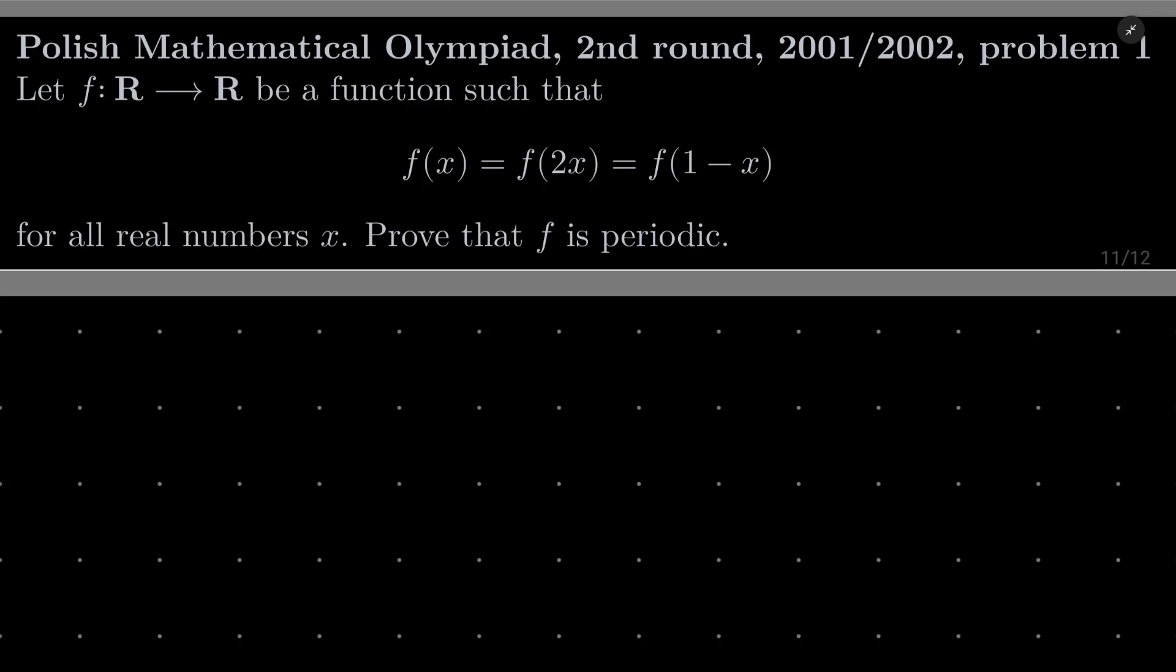Let f from the set of real numbers into itself be a function such that f(x) = f(2x) = f(1-x) for all real numbers x. We wish to prove that f is periodic.